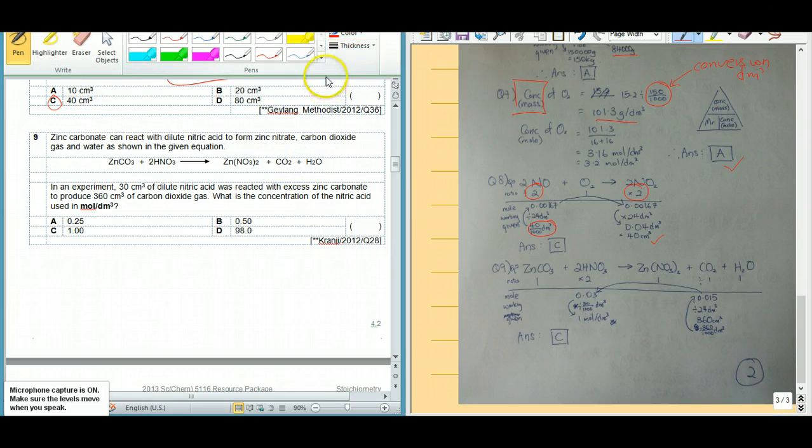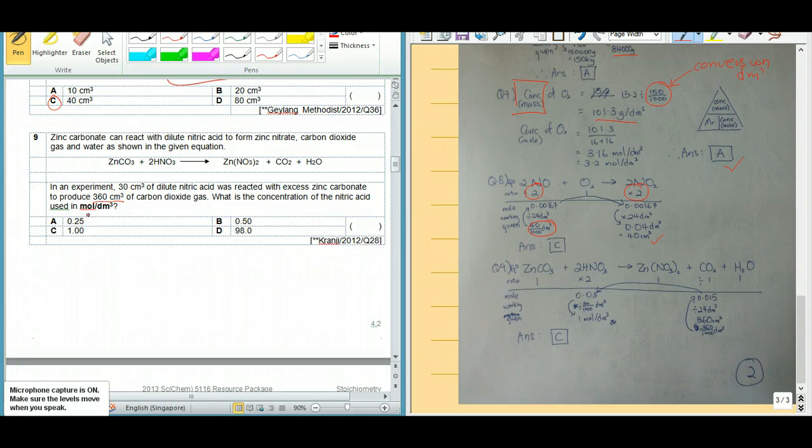So they said that in this experiment, 30 cm³ of dilute nitric acid was reacted with excess zinc carbonate and it produced 360 cm³ of the carbon dioxide gas. So what was the concentration of nitric acid in mol per dm³?